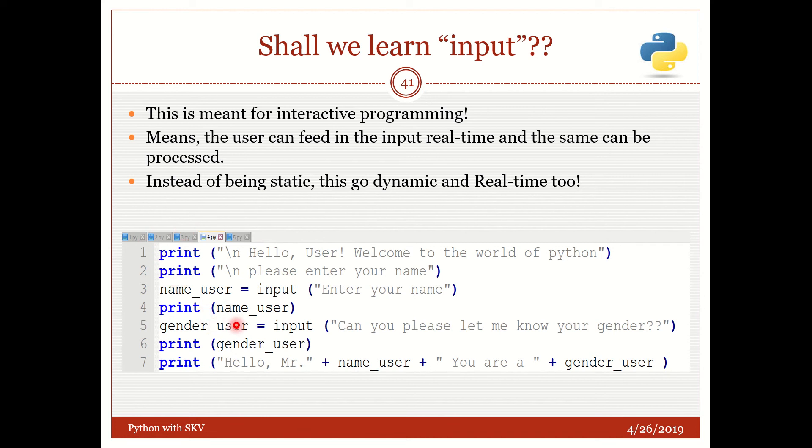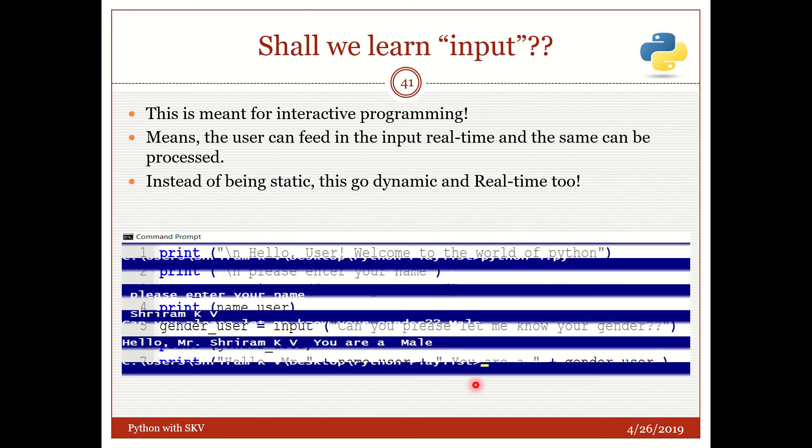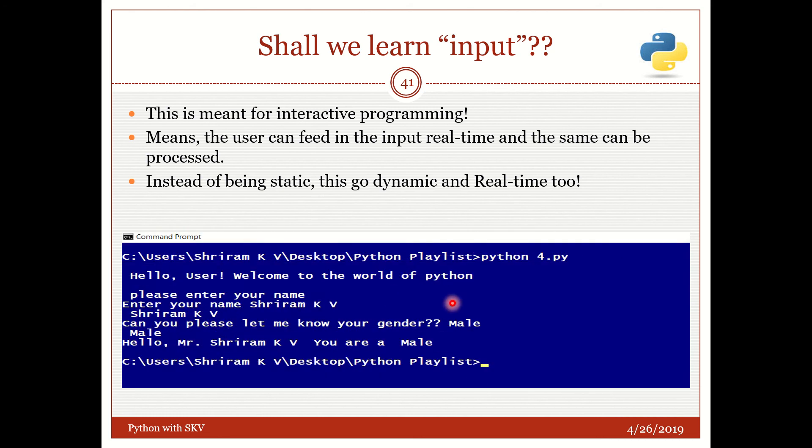Print name. Now name_user is the variable name equal to input of 'Enter name', which means this can be obtained from the user and will be assigned to this. Print name_user. So I have scanned the input from the user and I have assigned to the name_user and I got it printed very clearly when I ran it. Now gender_user input of 'Can you please let me know your gender'. Print gender_user. Now hello sir, I'm going to mix these two. 'Hello, Mr.' plus, see the way I'm using it, plus name_user.